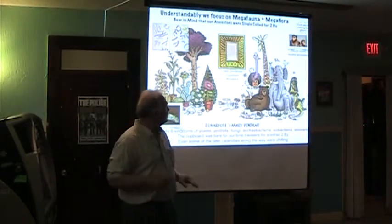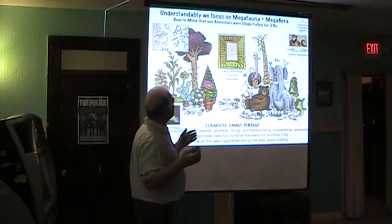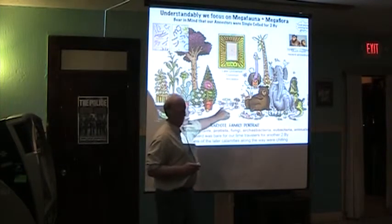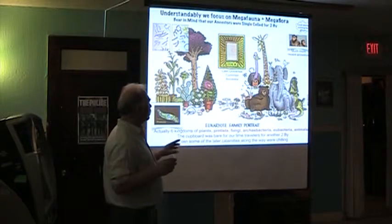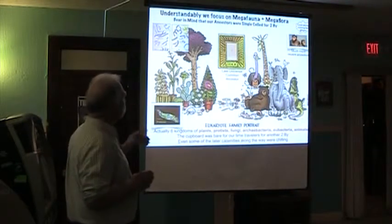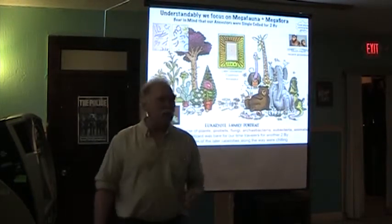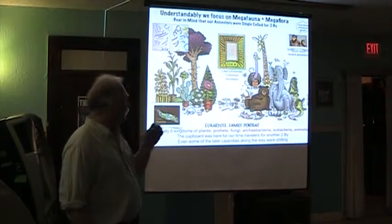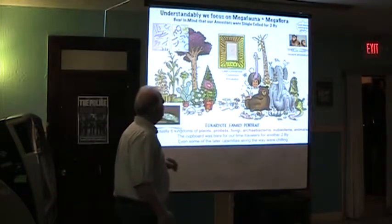Cyanobacteria — say hi to your ancestors. We tend to focus on multi-celled creatures, and they're not just plants and animals — there are protists, fungi, archeobacteria, eubacteria like staph and strep, and archeobacteria that are often extremophiles like those in hot springs. Don't miss LUCA — the Last Universal Common Ancestor. It's a single microscopic cell, but we know there was one because all these creatures of all types share the same DNA code, and that could not have happened by accident.